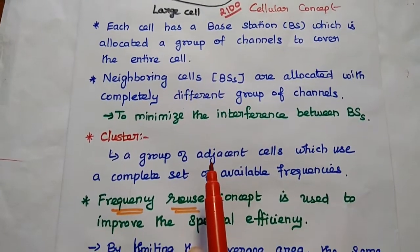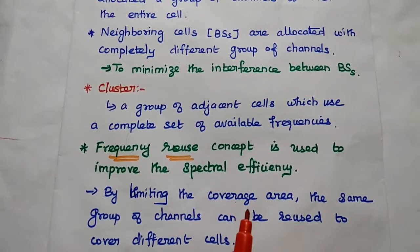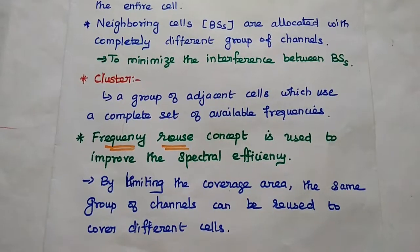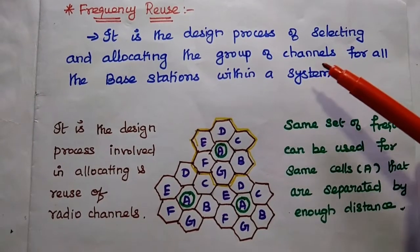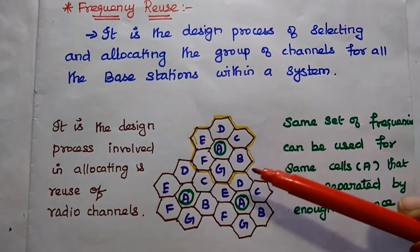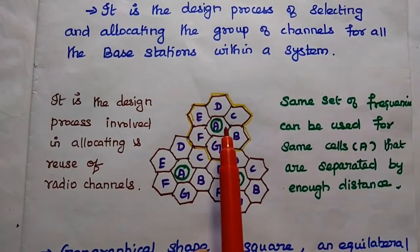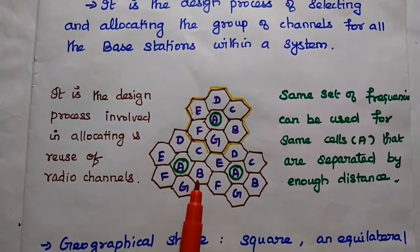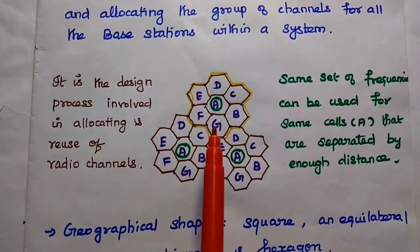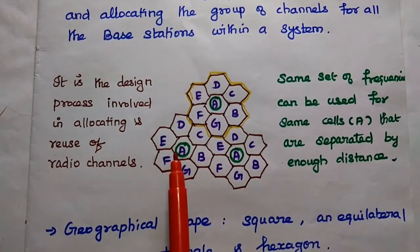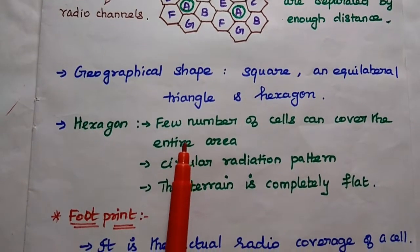Frequency reuse is used to improve spectral efficiency in wireless mobile communication. By limiting the coverage area, the same group of channels can be reused to cover different cells. We can define frequency reuse as the design process of selecting and allocating the group of channels for all base stations within the system. The same set of frequencies can be used to cover cells that are separated by a sufficiently large enough distance in order to reduce interference. Frequency reuse is the design process involved in allocating and reusing radio channels, and it improves spectrum efficiency in mobile communication.